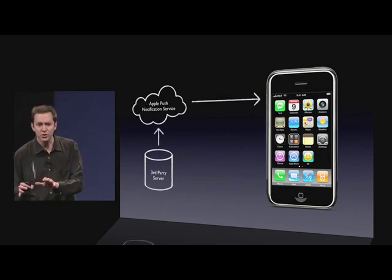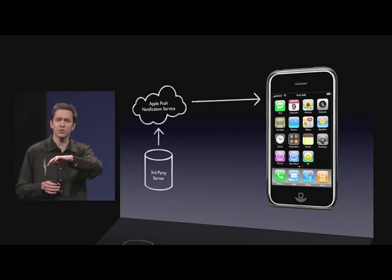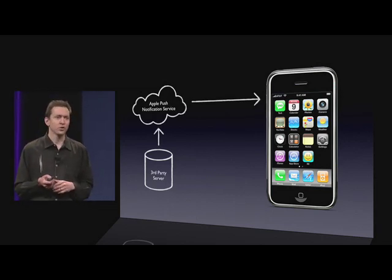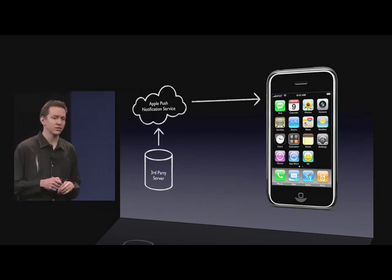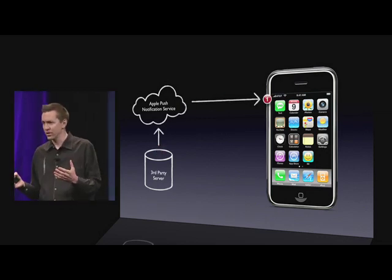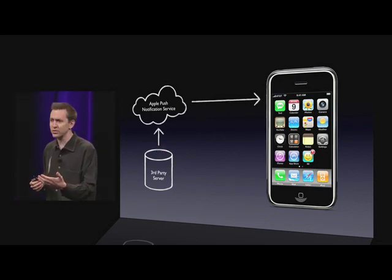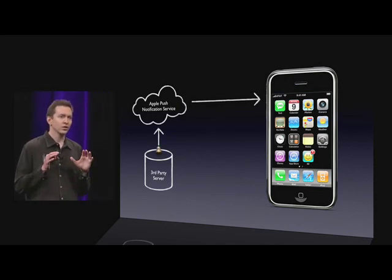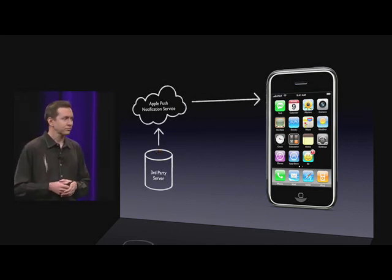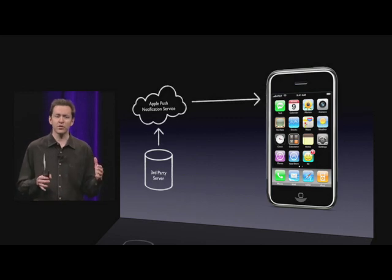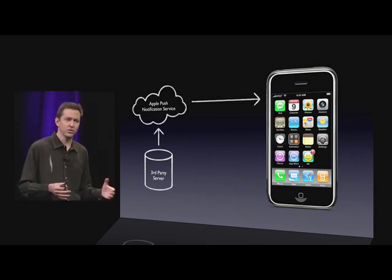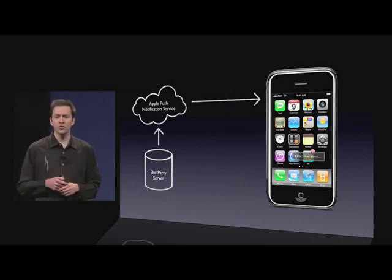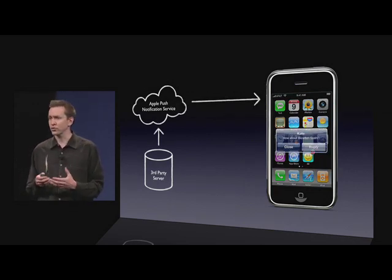So then the third-party server can push the notifications it wants through our service to your users. You can push three types of notifications. You can push badges, so you can alert the user how many messages are waiting in your application. You can push custom alert sounds. These can be custom to your application — you can have as many as you want and push different ones for different alerts.